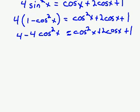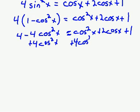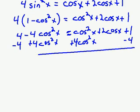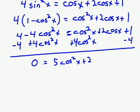I'm going to add 4 cosine squared x to both sides and subtract 4. So I'll have a 0 on the left-hand side and 5 cosine squared x plus 2 cosine x minus 3 on the right-hand side.